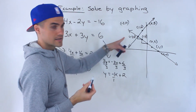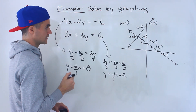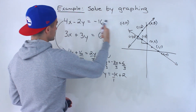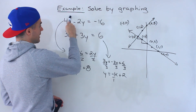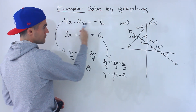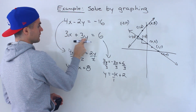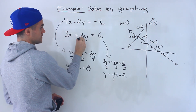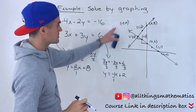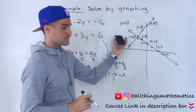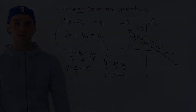So (-2, 4) is actually where both of these lines intersect. You can check this — plug in negative 2 for x and 4 for y in the first equation: we get negative 8 minus 8, which is negative 16 — left side equals right side. Plug negative 2 and 4 into the second equation: we get negative 6 plus 12, which is 6 — left side equals right side. So when you get a coordinate from your graph, you can verify it by plugging it into the original equations and confirming both sides are equal.